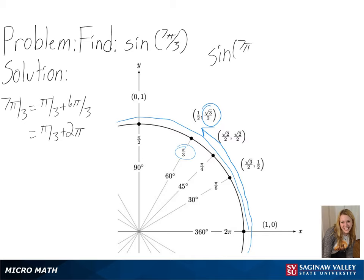So for sine of 7 pi over 3, we get the square root of 3 over 2 as our final answer.